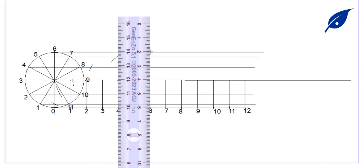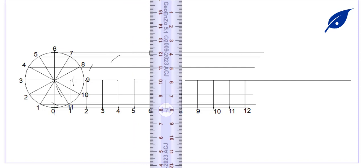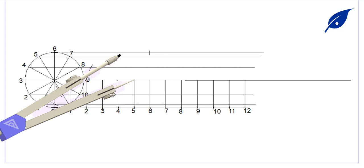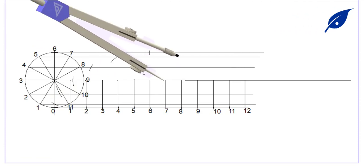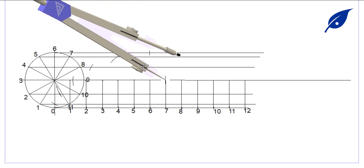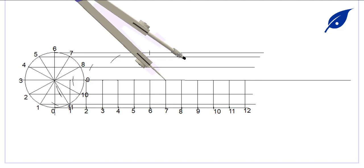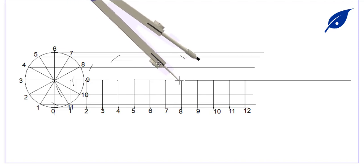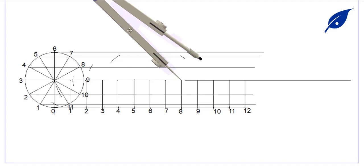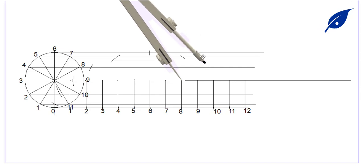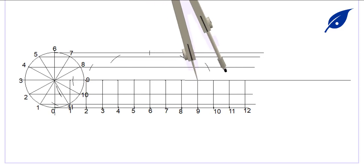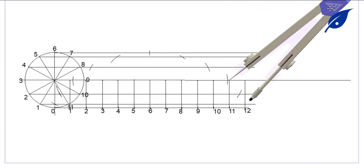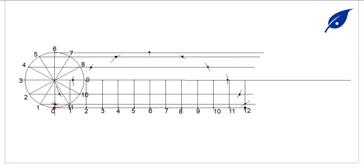Continuing from position 7, we place the compass pin at the center point and describe an arc on the horizontal line for position 7 to get that locus point. We then repeat the same process for positions 8, 9, 10, 11, and 12. With this, we are able to get all the required points that give us the locus of our cycloid — the path in which the circle turns.